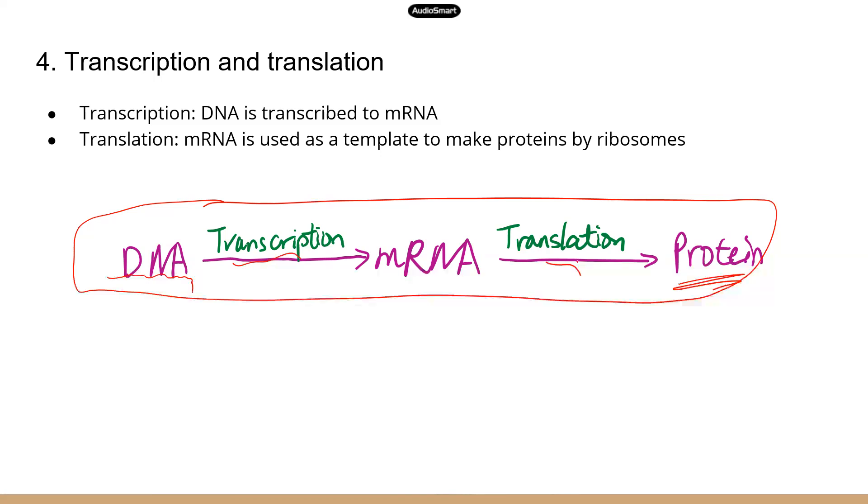Now you may ask, why can't we just have one step from DNA to protein? That's not possible. If you remember the cell structure, let's say that's the big cell, and then there is nucleus, and that's where DNA is located. The protein-making machinery, ribosome, is located in the cytoplasm.